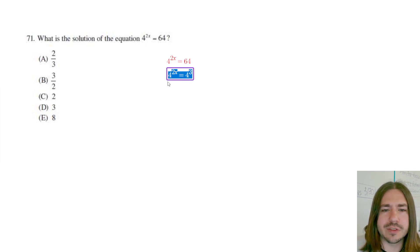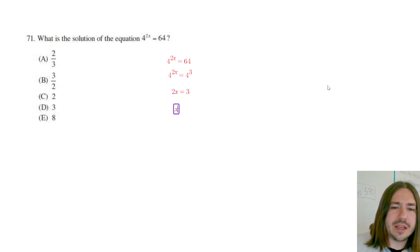Drop the bases and set the exponents equal to each other. Yeah, always fun to drop the base. Anyway, so here we've got 2x equals 3, and I can divide both sides by 2 and I get three halves. So you can see the algebra is not too bad here.